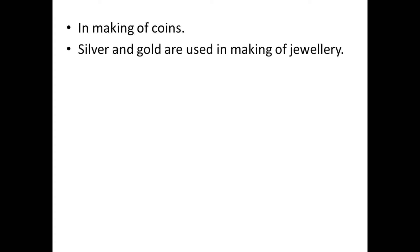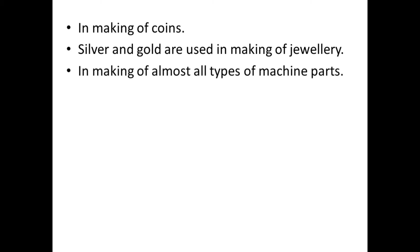Metals are also used in making of coins. Silver and gold are very important metals — they are used in making of jewelry. We all know that for making jewelry, we use either silver or gold. In making of almost all types of machine parts, metal is also used.